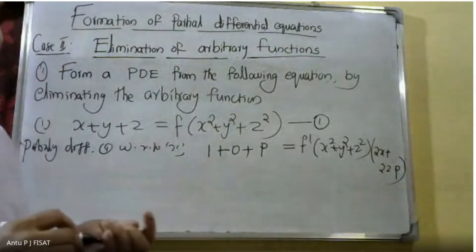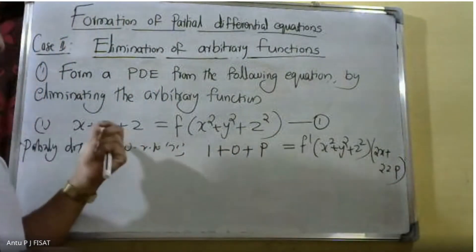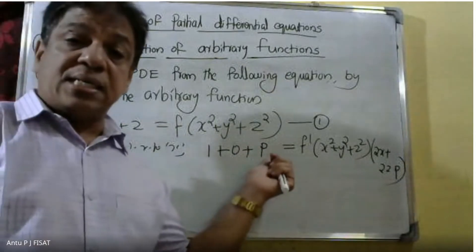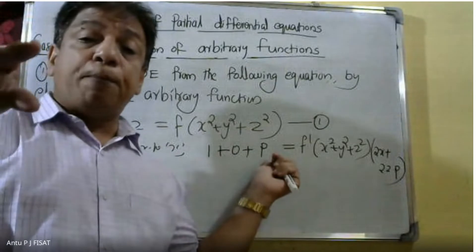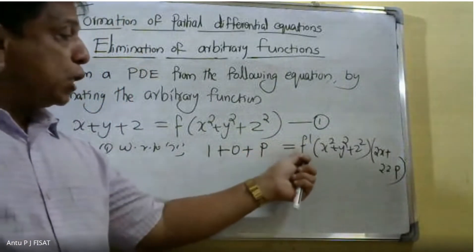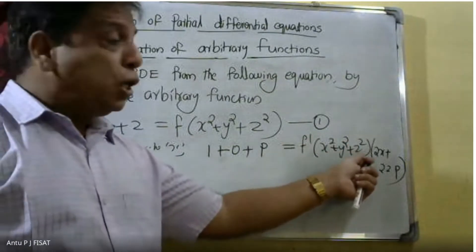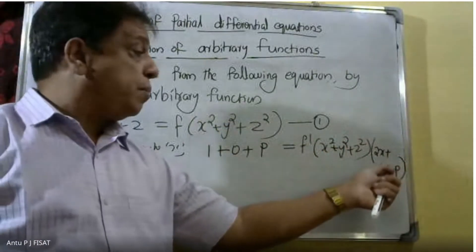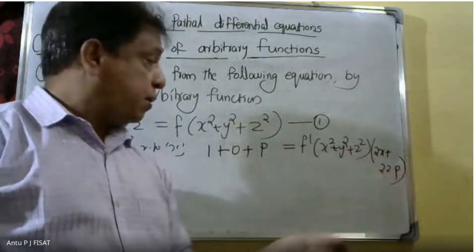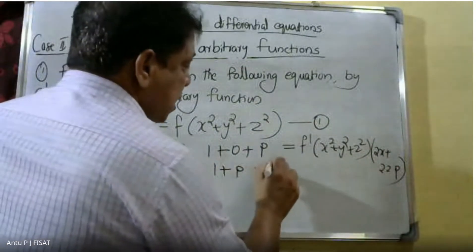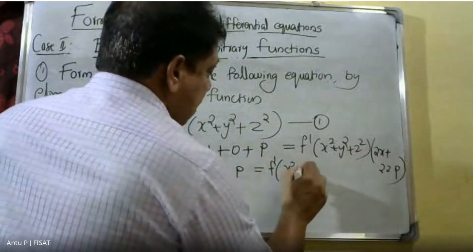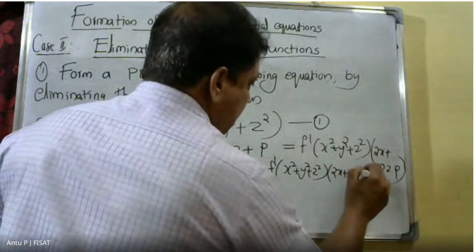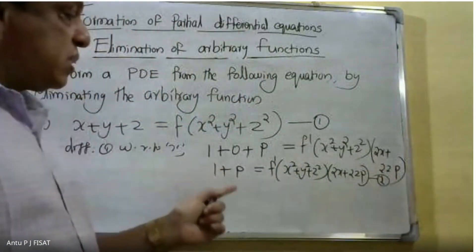Differentiating the left hand side: one plus P. On the right hand side, differentiating F of X square plus Y square plus Z square: the derivative of X square is 2X, Y square gives zero, Z square gives 2Z into P. So equation 2 is: one plus P is equal to F dash of X square plus Y square plus Z square into two X plus two Z into P.